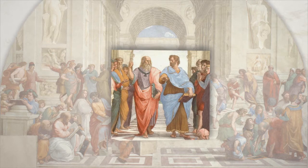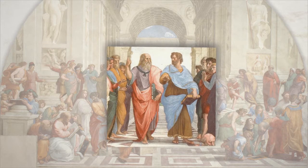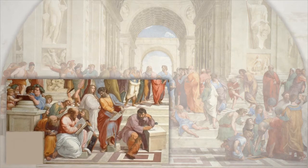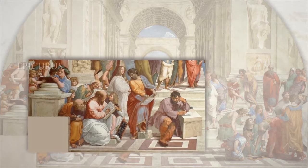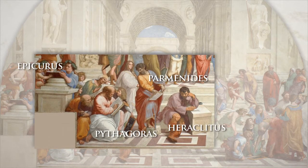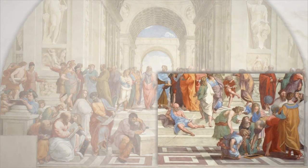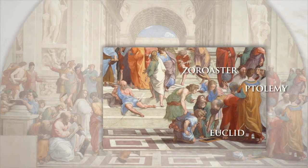The book each scholar holds serves to further highlight each man's focus. Plato holds his Timaeus, and Aristotle his Ethics. In the lower left register, we see Pythagoras, Parmenides, and Epicurus. These three, along with Heraclitus, pictured in the foreground writing on a block of stone, represent four of the five pre-Socratic schools of thought, which sought to investigate the natural world and man's place in it. In the lower right register, Raphael pictures Ptolemy, Zoroaster, and Euclid, three astronomers who embodied the ancient world's attempt to unravel the riddles of the universe and to explain that which transcends the material.